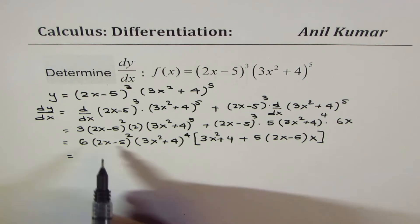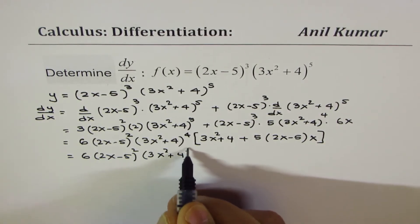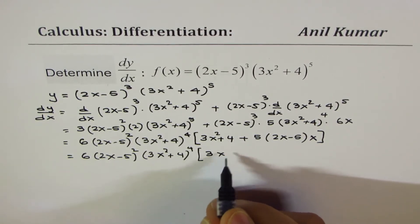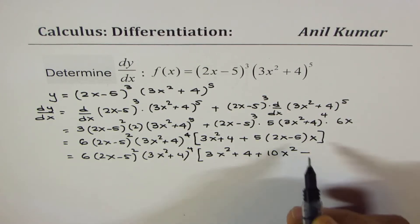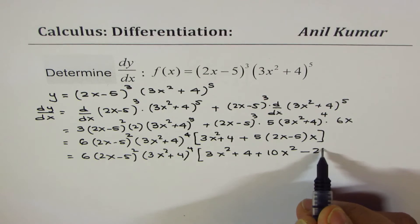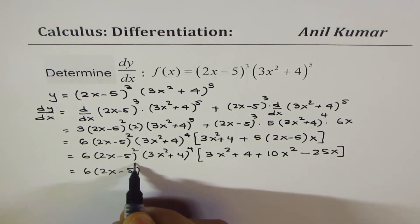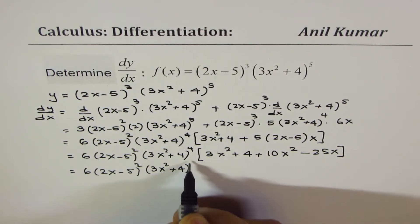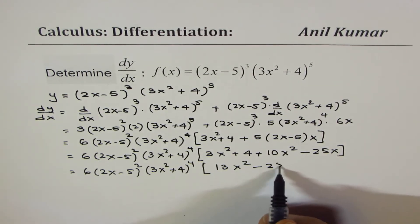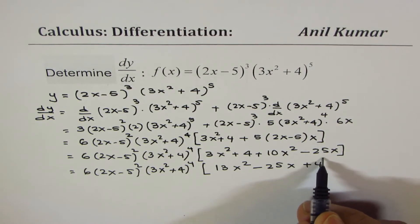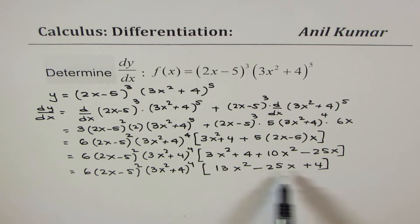Now let us copy the first term, which is 6 times 2x minus 5 whole square, times 3x squared plus 4 to the power of 4, and within brackets let's open this and combine. So we have 3x squared plus 4, plus 5x times 2 is 10x squared, and 5x times minus 5 is minus 25x. So we get 6 times 2x minus 5 whole square, times 3x squared plus 4 to the power of 4, and 3 plus 10 is 13x squared, then we have minus 25x, and then we have number 4.